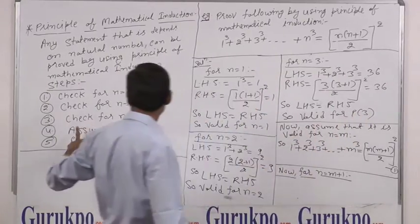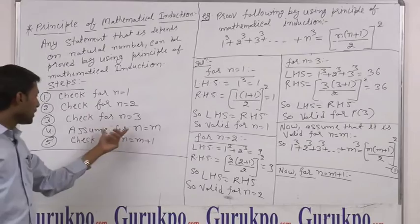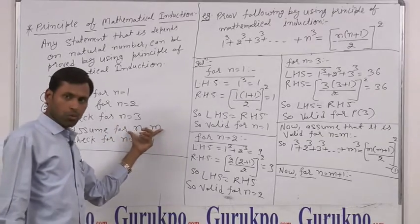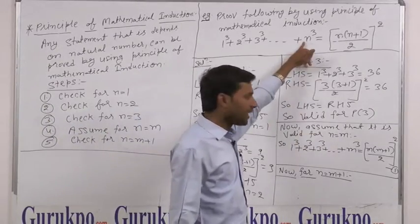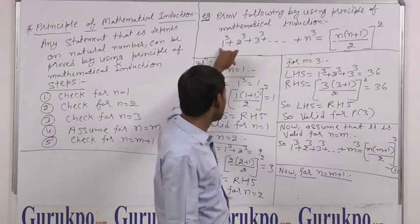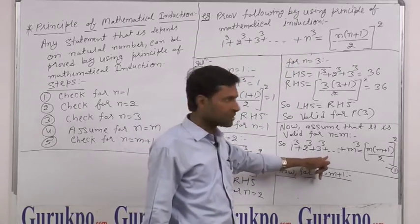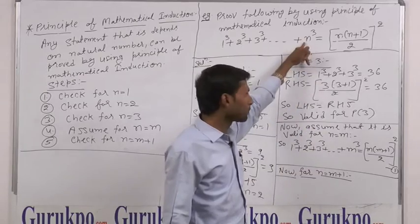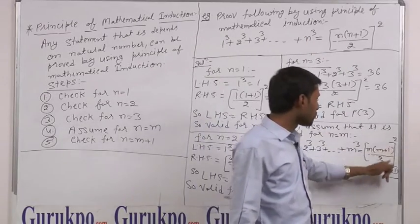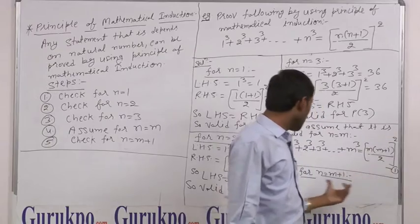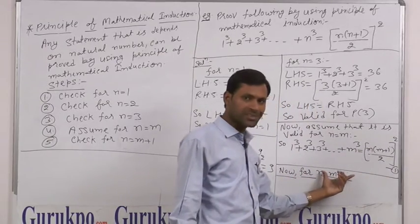Now we assume the following statement is proved for n equal to m. So we replace m in place of n. Our statement becomes: 1 cube plus 2 cube plus 3 cube plus ... plus m cube equals m(m+1)/2 whole square. Now we need to prove it for n equal to m plus 1.